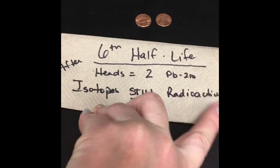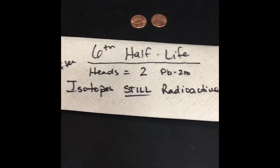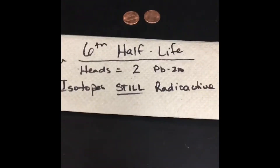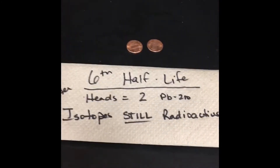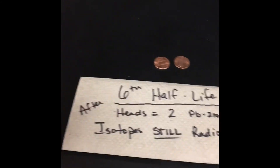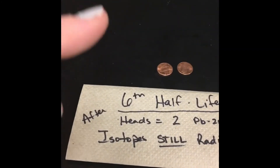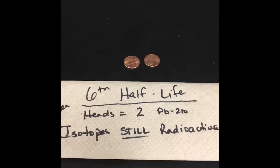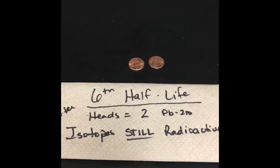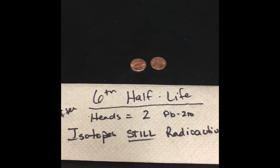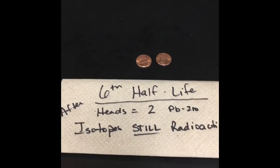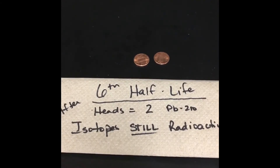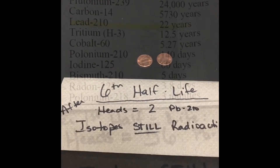If you were to graph this, because you're always dividing the amount in about half, what you're going to see is that the mass of what's still radioactive on your graph is going to kind of curve down. This has been the data for the Half-Life Penny Lab. Thanks for joining me — I'm Ms. Venable, and I'll see you in the next one.